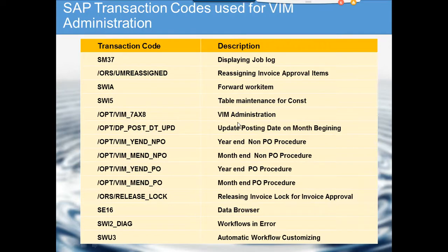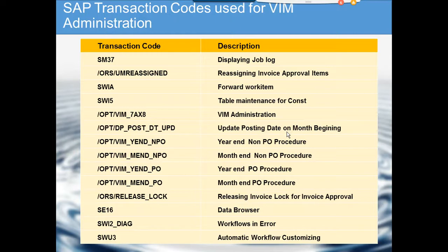The next transaction code is for updating the posting date at month beginning. In some cases you can default the posting date to the system date, but if the posting date is based on document date or another date, it becomes difficult. You cannot post invoices in a previous month because the fiscal period has been closed in FI, so this transaction code is used to update the posting date at month beginning.